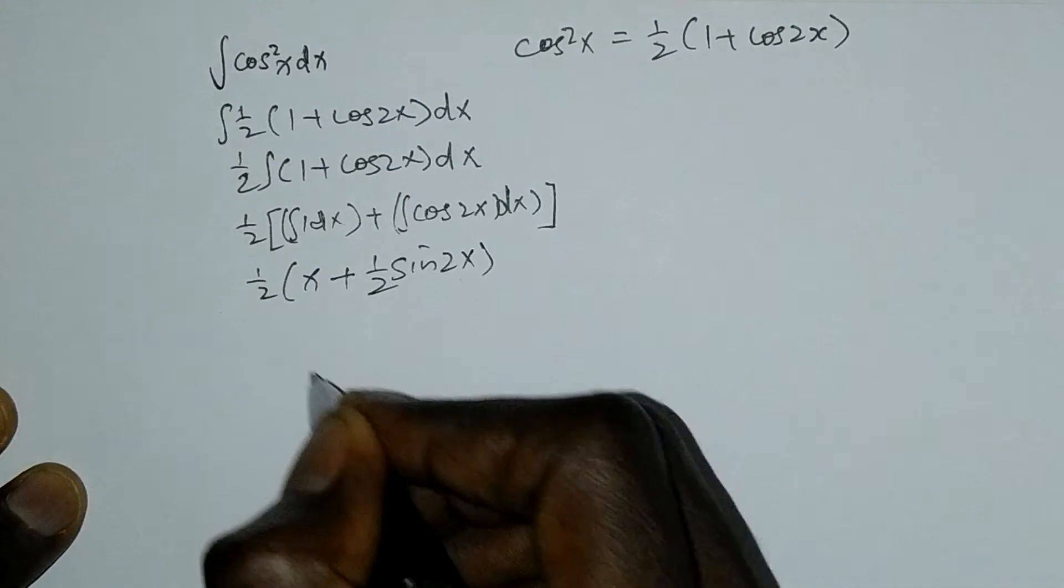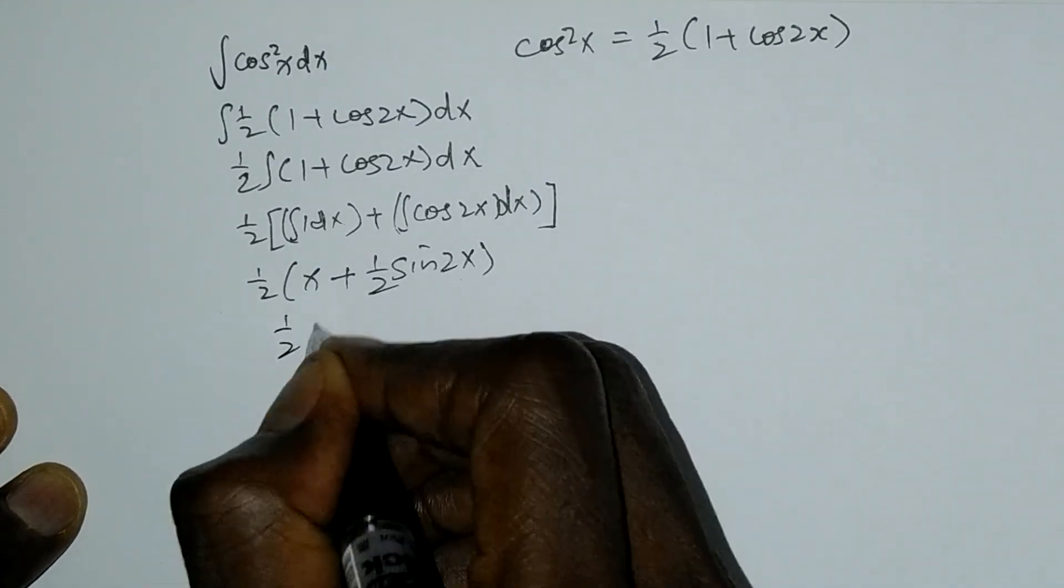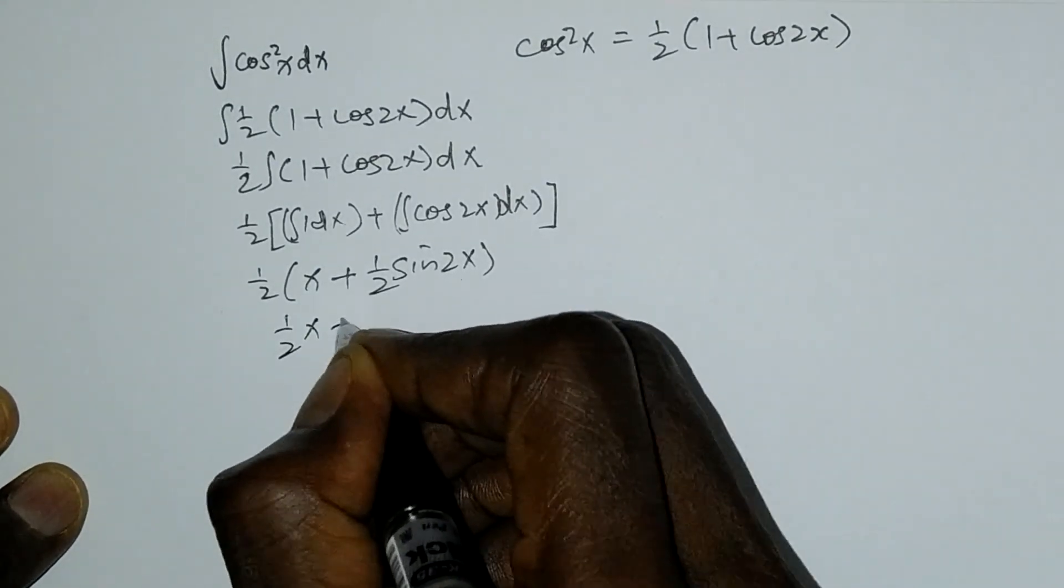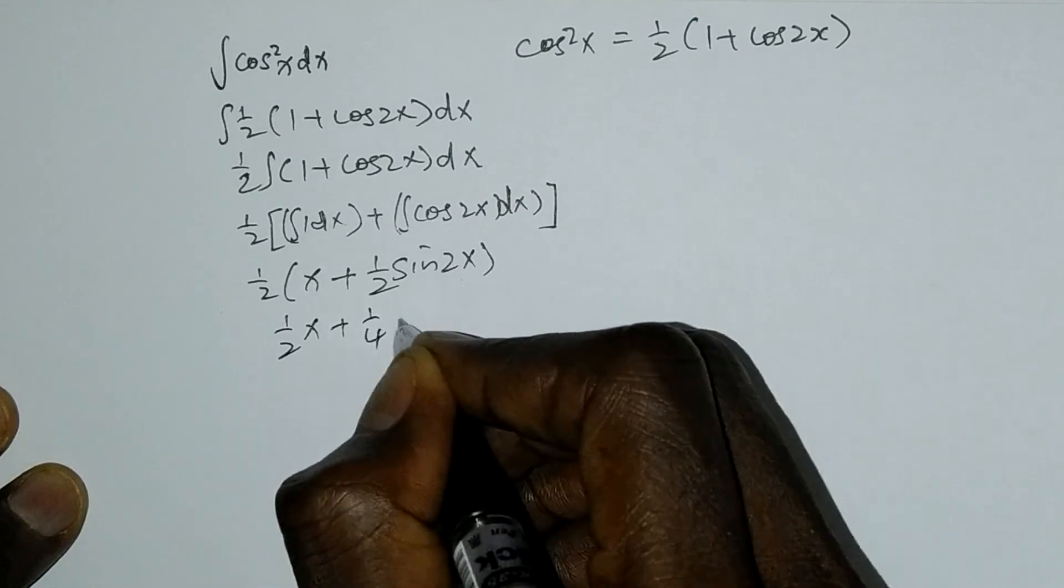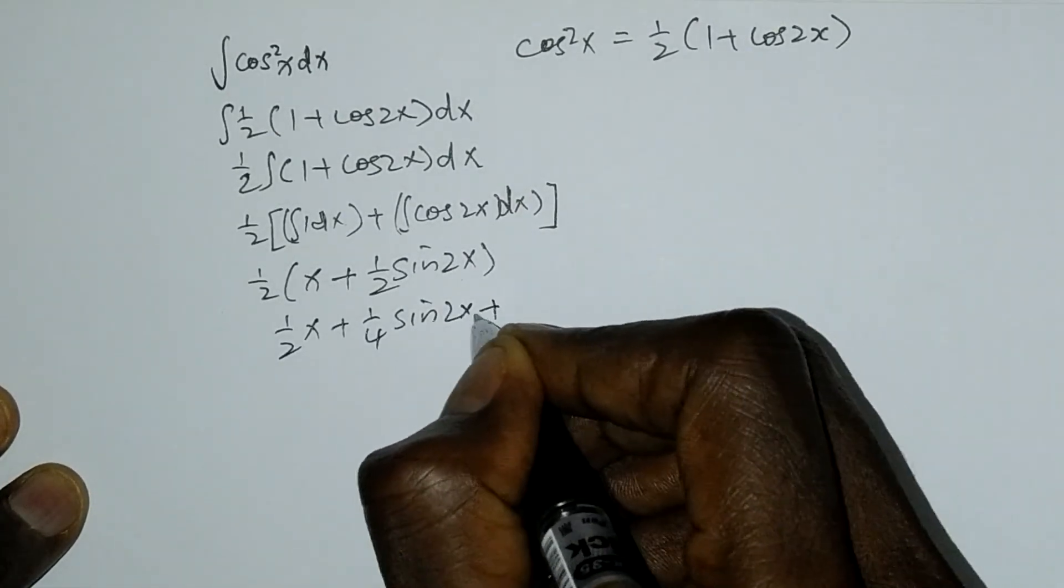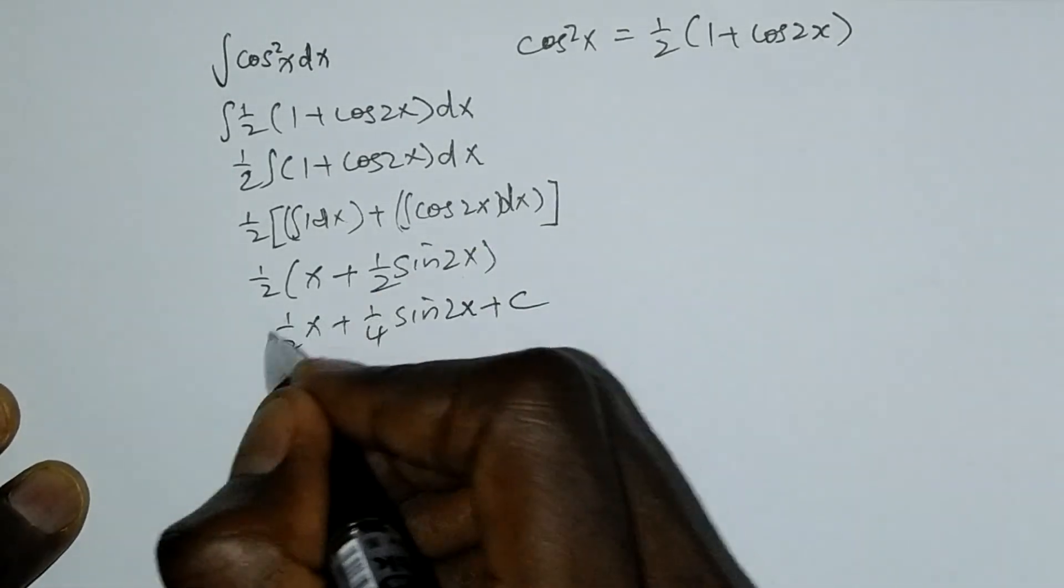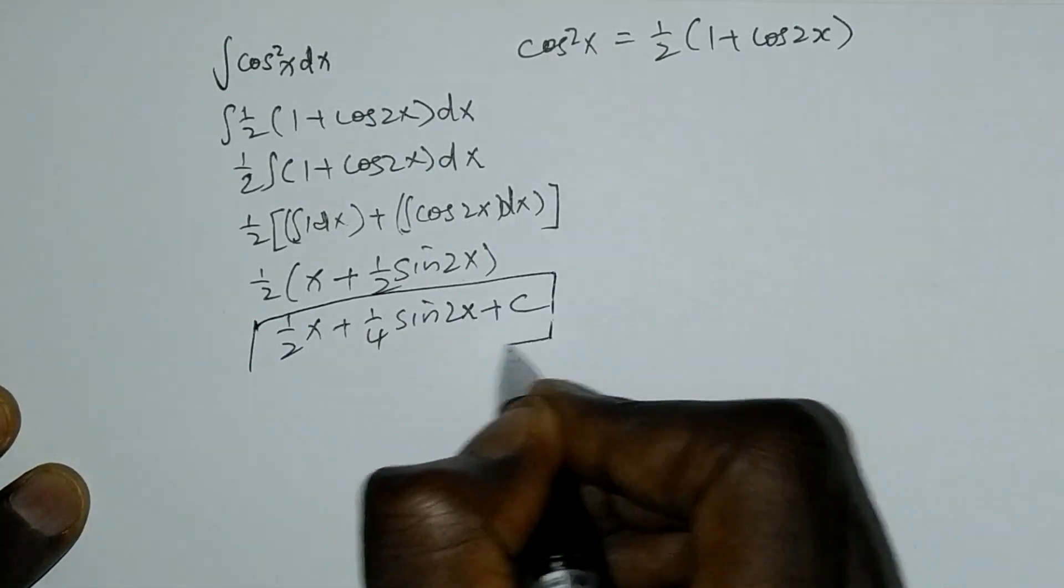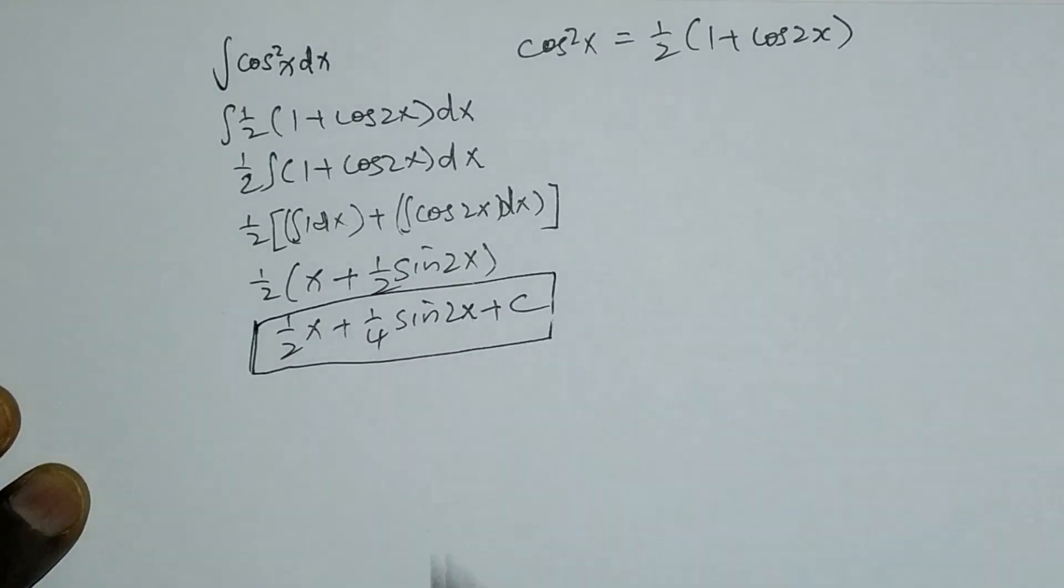Opening the bracket: 1/2(x + 1/2 sin2x) + C. We are done, thank you.